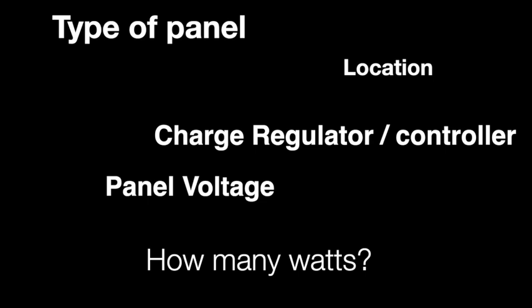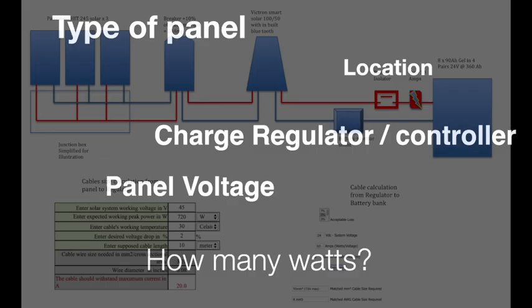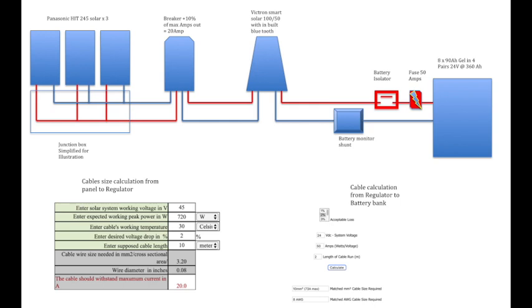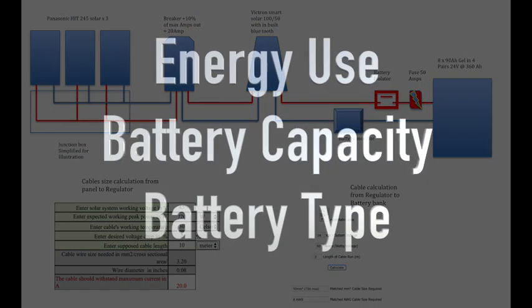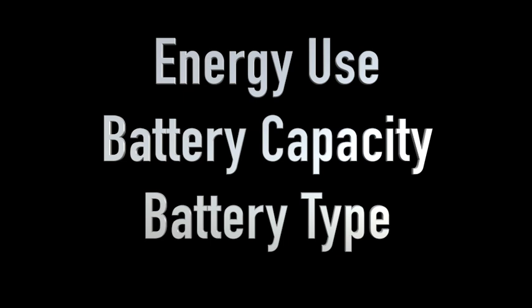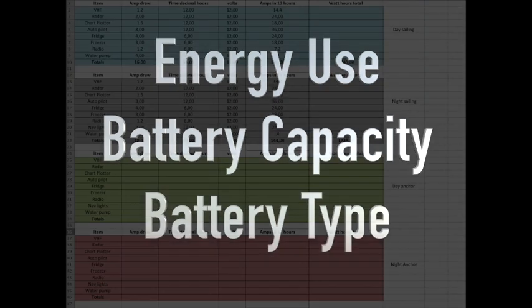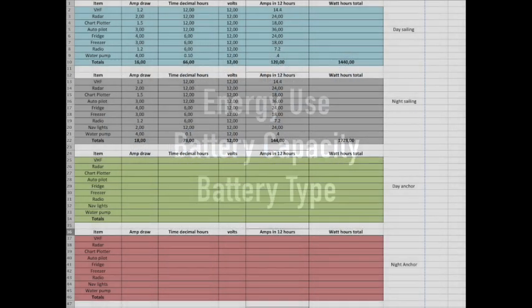Type of panel, location, charge regulator, panel voltage, and how many watts you need. Let's get started. Well, first you've got to design your system. No, hang on a minute, roll it back. The first things we need to know are the energy use, your battery capacity, and the battery type before you start deciding what panels you're going to use.